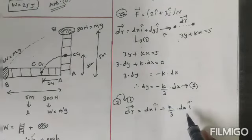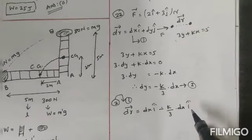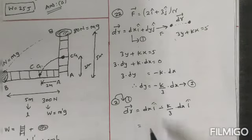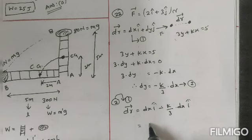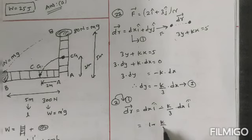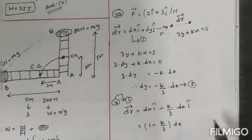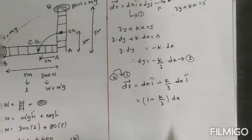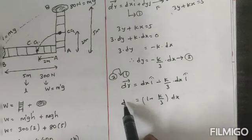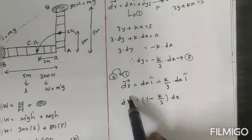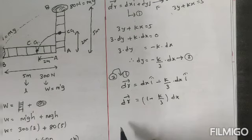But here minus is there, so minus k by 3 into dx. Therefore dx is common, so 1 minus k by 3 is there inside the bracket, then dx i cap. This is the dr vector.